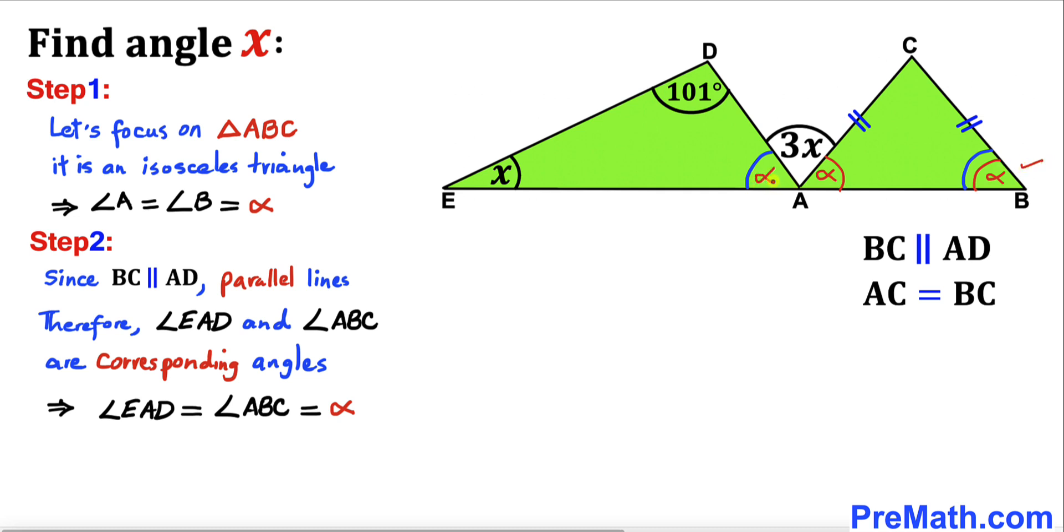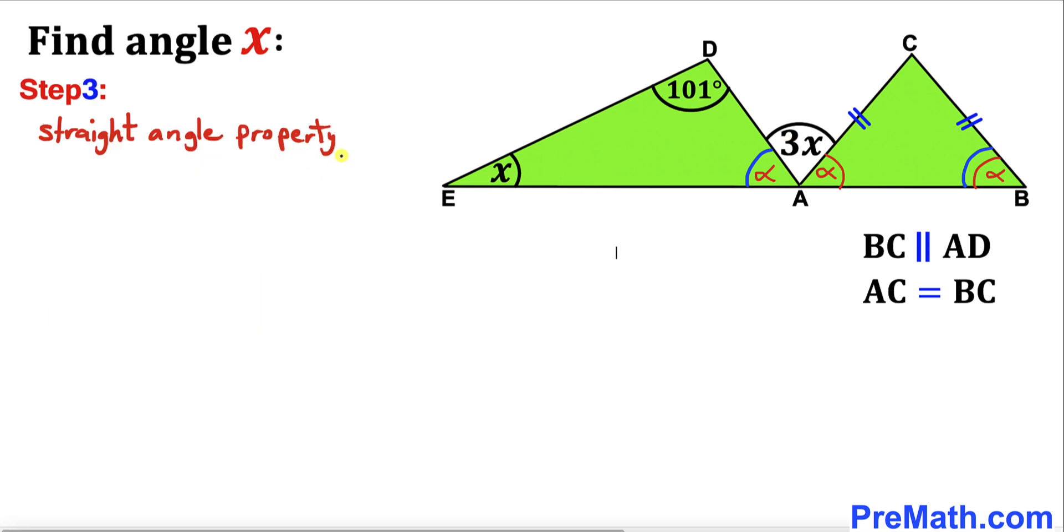Here's our next step. Let's recall the straight angle property. This whole angle is 180 degrees, which means this angle alpha plus this angle 3x plus this angle alpha must be 180 degrees.